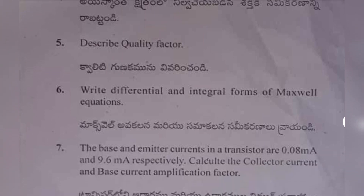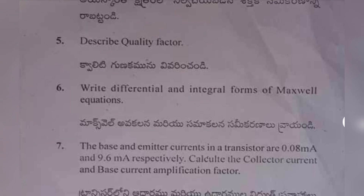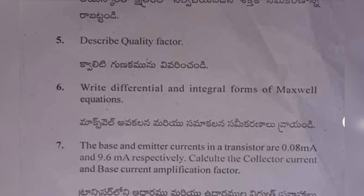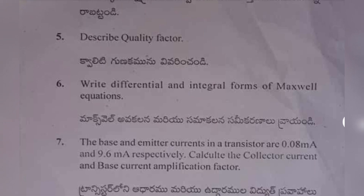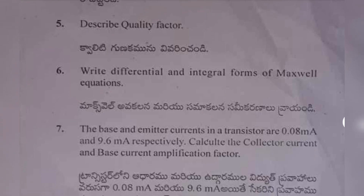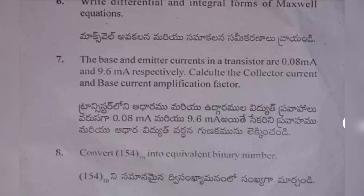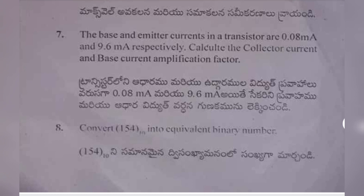Seventh one: the base and emitter currents in a transistor are 0.08 mA and 9.6 mA respectively — calculate the collector current and base current amplification factor. Eighth one: convert 154 (power 10) into equivalent binary number.